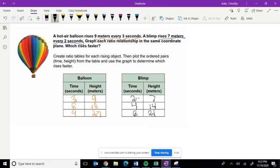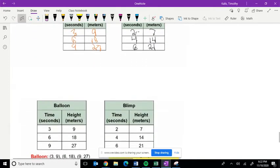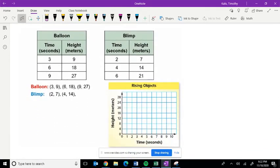Now, we're going to use these two ratio tables to then develop coordinate pairs to then be able to graph. So here are our completed ratio tables. And for the balloon, our ordered pairs are 3, 9, 6, 18, and 9, 27.